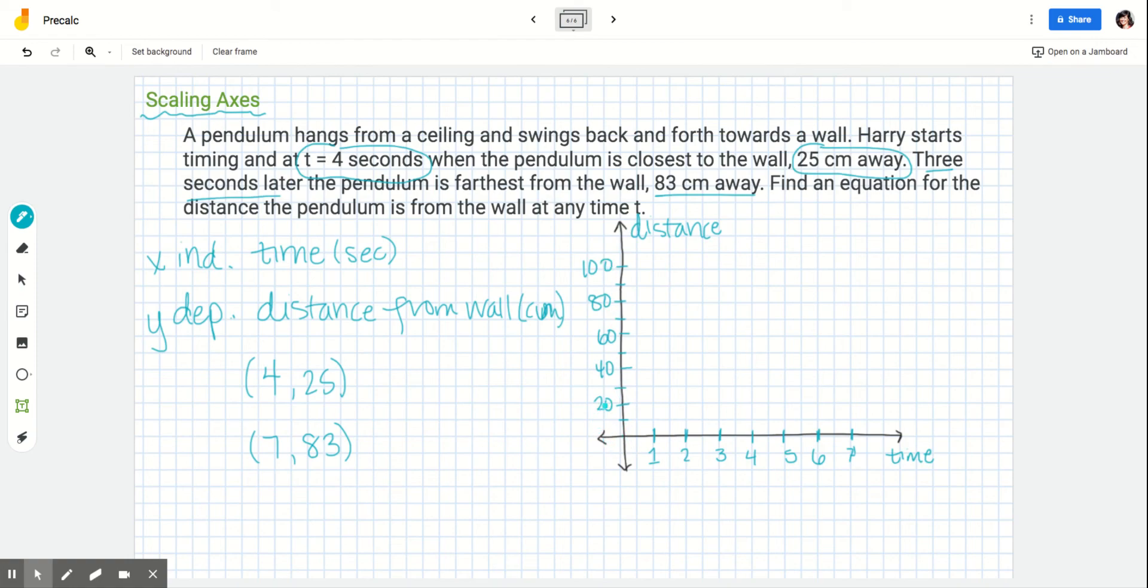Now I can graph (4, 25) which would be about right here, and I can graph (7, 83) which would be about right here.